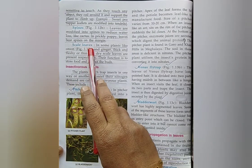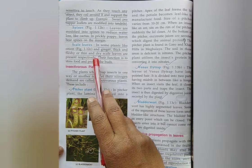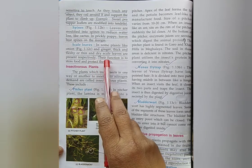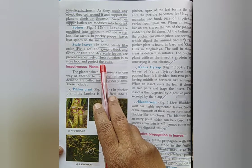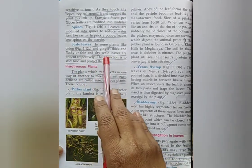What are scale leaves? Write the function of scale leaves. Some plants like onion and ginger, thick and fleshy or thin and dry scale leaves are present respectively. Their function is to store food and protect the buds. The function is to store food and protect the buds.